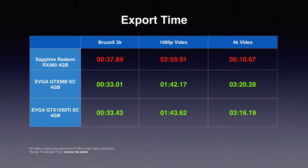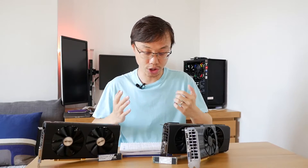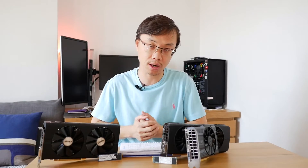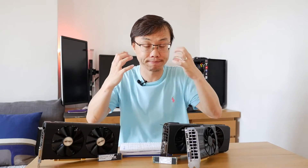Hold your horses, guys. Check out the export time. The GTX 1050 Ti actually takes less time to export the Bruce X 5K, less time to export 1080p video, and less time to export 4K video — and it outperformed the 980 SC as well. That such a small, single-fan, and relatively cheap graphics card outperformed those two heavy-duty graphics cards is mind-blowing.